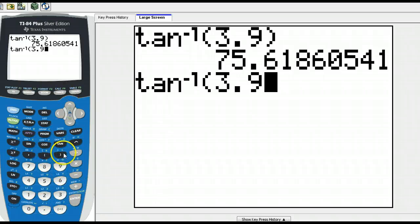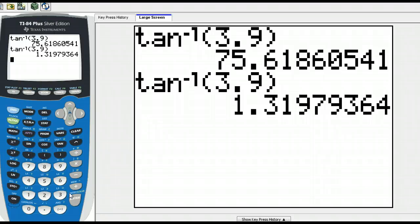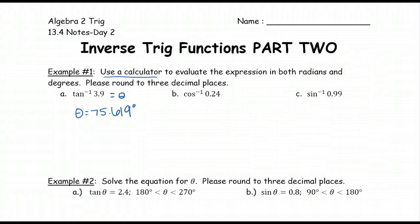That will save you some time in the future, so otherwise you have to retype it in every time. Radians for the angle that has a tangent of 3.9 is 1.320 after we round to three decimal places. Remember we don't write radians, we just assume it's radians if it doesn't say degrees.